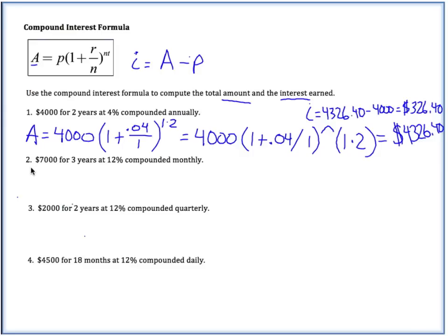Let's try number 2. Here we have $7,000 for 3 years at 12% compounded monthly. So when I write this out, I'm just going to start writing it out like I type it into my calculator. So we have our $7,000 times 1 plus our rate .12 divided by the number of compounds per year. So monthly equates to 12. And this is going to be raised to the power of n times t. So n was 12, and then this is going to be for 3 years.